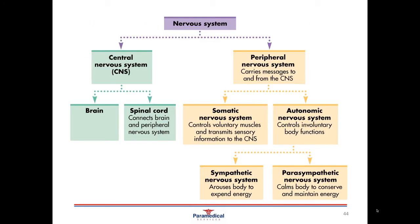Branching off from those two divisions in the nervous system, we have a few subdivisions running off them. We'll first look at the central nervous system, which consists of the brain and the spinal cord.